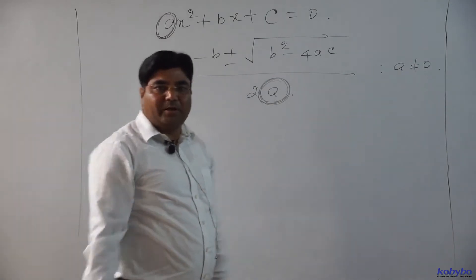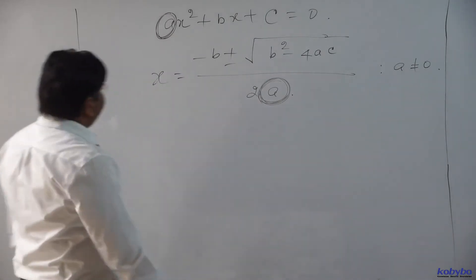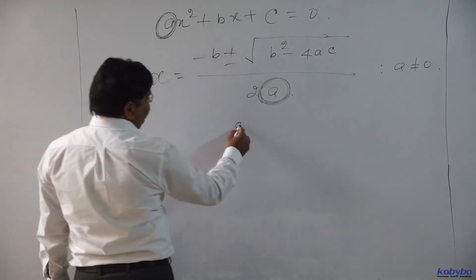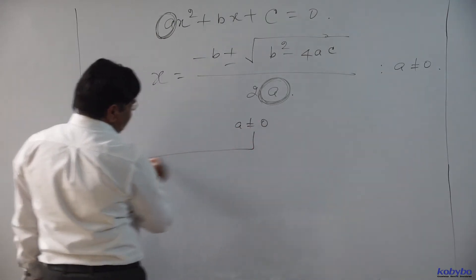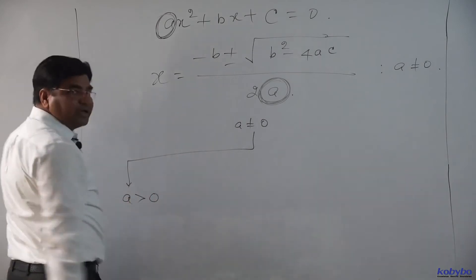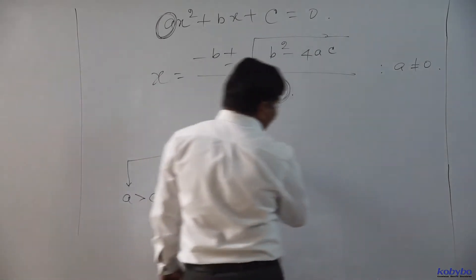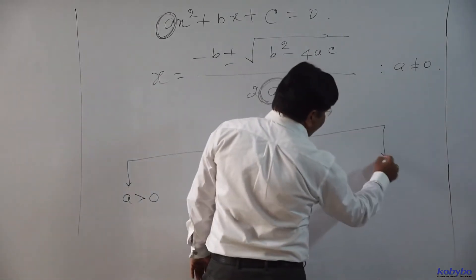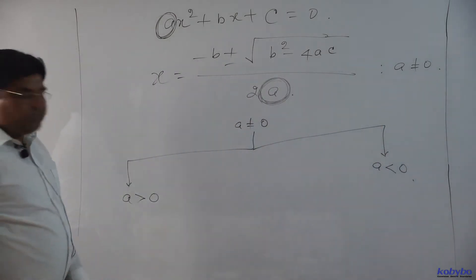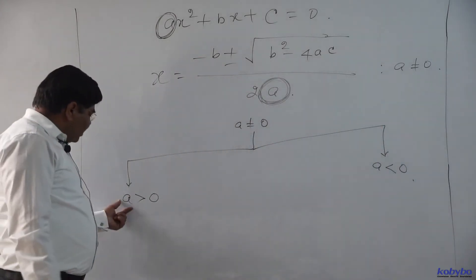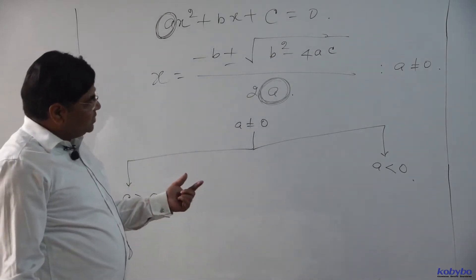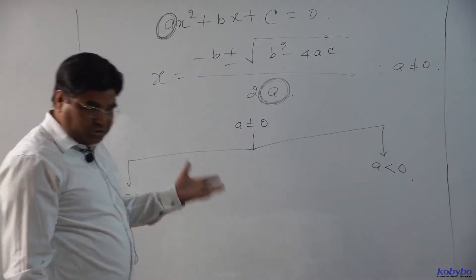That first condition is very much clear. Now, if the coefficient of x² cannot be equal to 0, then we have two possibilities: either A is greater than 0, or A is less than 0.